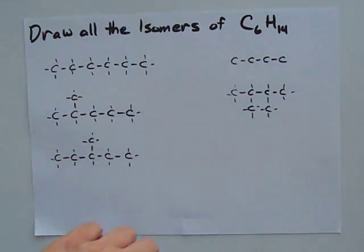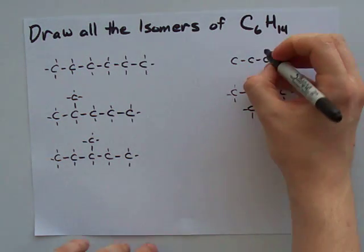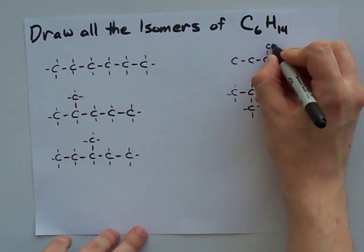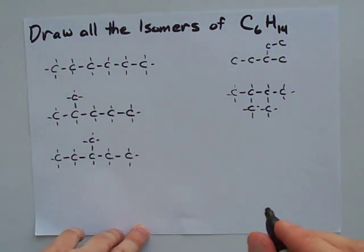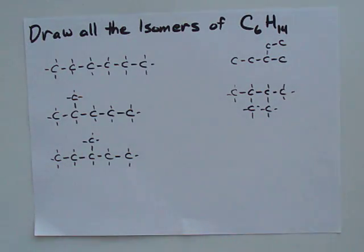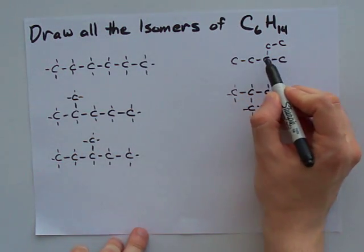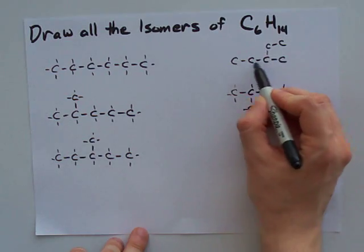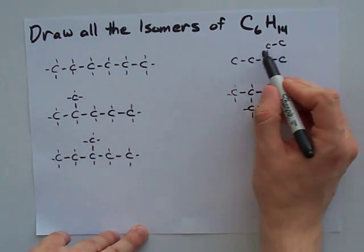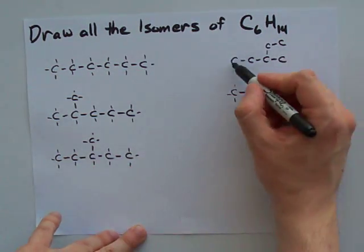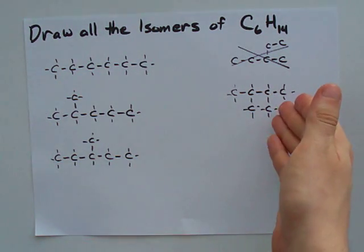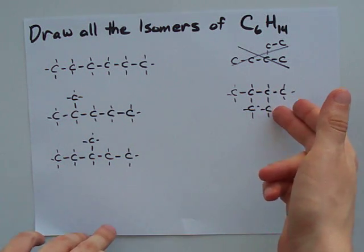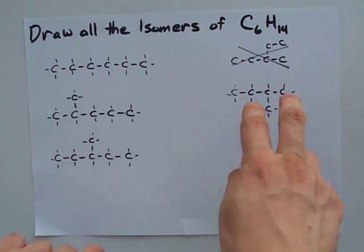Oh, I didn't attach it there like I should have. One other place we could try to attach this is maybe attaching it to one of the middle carbons. Again, we can't attach it to the end carbon, because then we're just right back where we started here. But, the issue here is, you have 1, 2, 3, 4, 5 carbon chains with one sticking out of the middle. This is exactly the same as this. So, that's not unique.